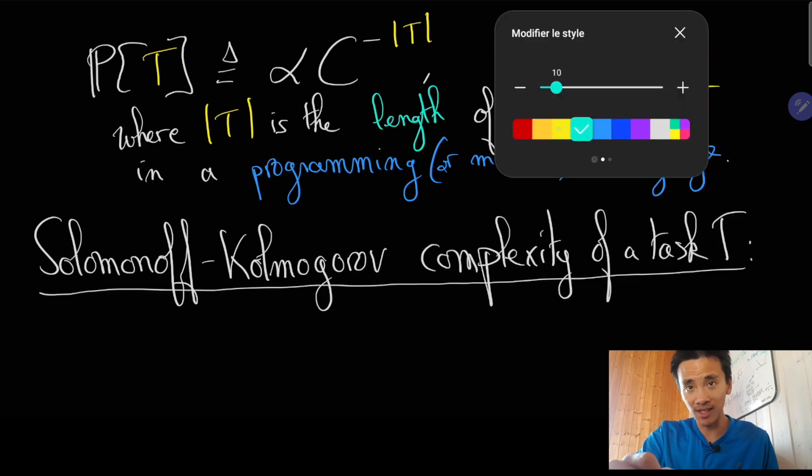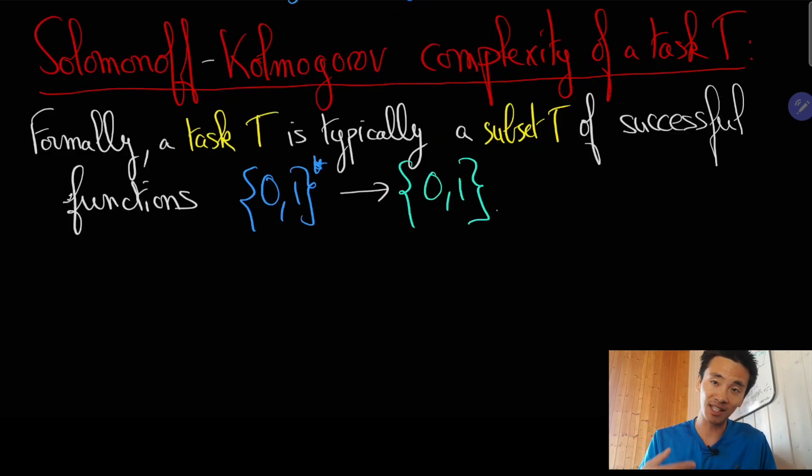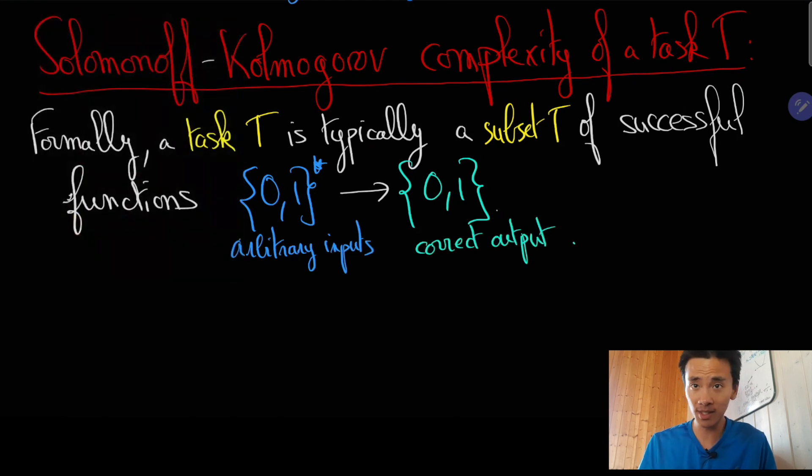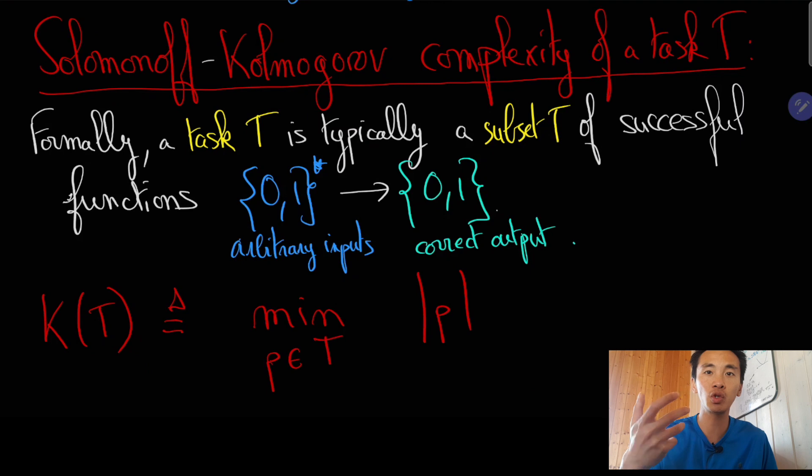This led Solomonoff to introduce in 1960 a measure of complexity of any task, like recognizing cats in images with 99% accuracy, beating AlphaGo at the game of Go, or passing the Turing test. Solomonoff defined the complexity of a task as the length of the shortest code that successfully solves the task.